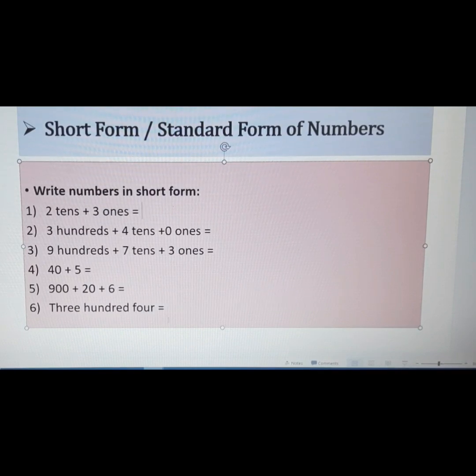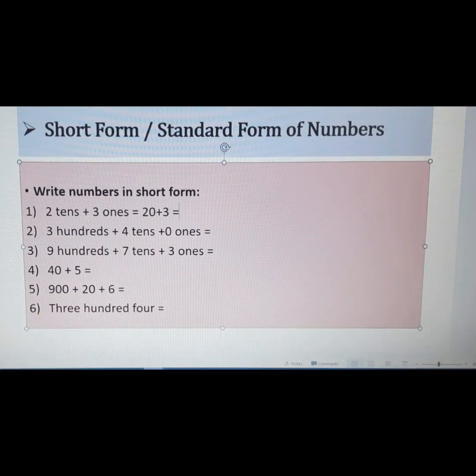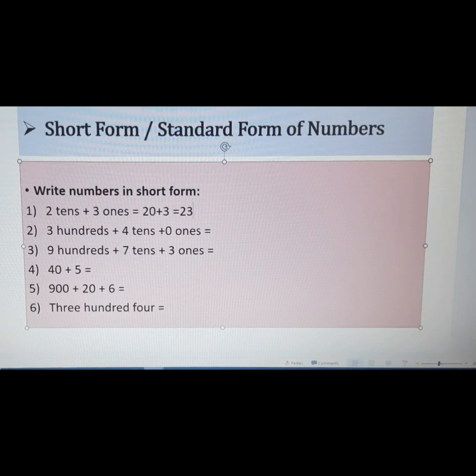So we can write here that number. 2 tens means it is 20. And then 3 ones means 3. So if you will make a number using these 2 digits, then the number will form 23. So it is 23. So 2 tens plus 3 ones is equal to 23. Understood?